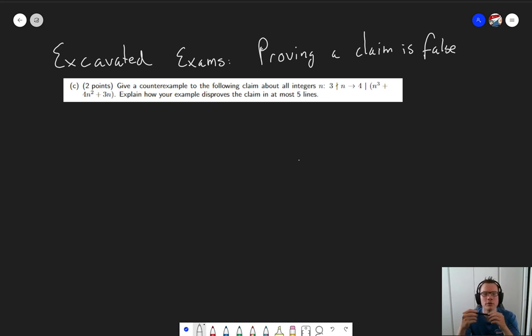An old exam question in which we need to give a counterexample to the claim that for all integers n, if 3 does not divide n, then 4 does divide n to the third plus 4n squared plus 3n.